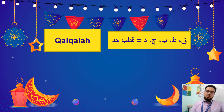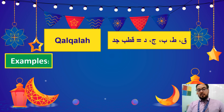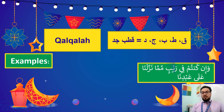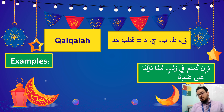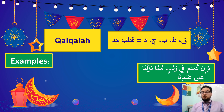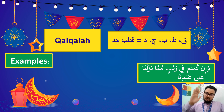Then we will do Qalqalah. What is Qalqalah? Qalqalah is to pronounce the letter in a specific way. For example, in this ayah in the word عبدنا — we are not saying it flatly. We make the place where the letter comes out have a touch and come back — like عبدنا.